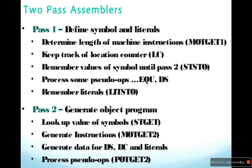There are five characteristics of first pass: define symbols and literals; determine the length of the machine instruction; keep track of location counter; remember values of the symbols until pass two; process some pseudo-ops like EQU, DS, DC; and remember literals.